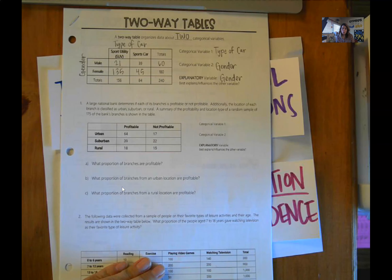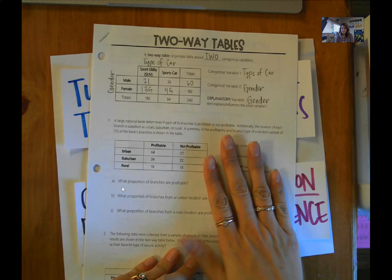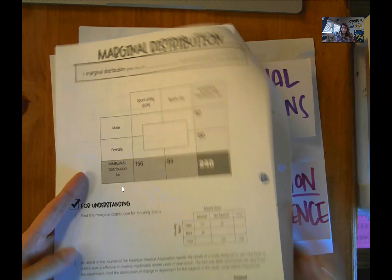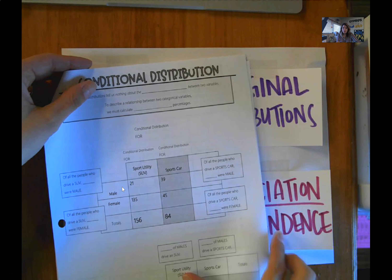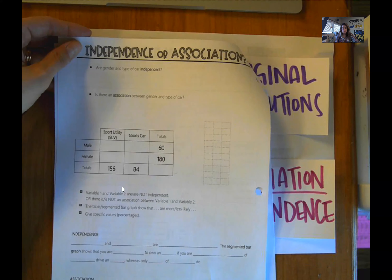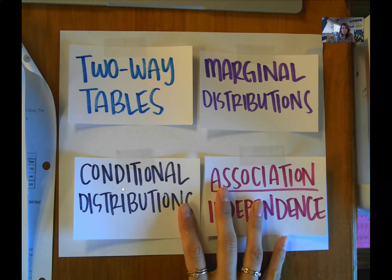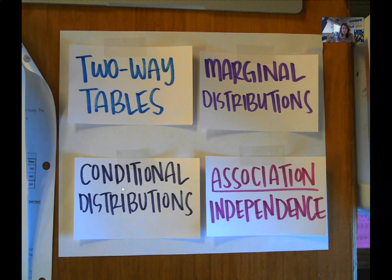Each one of these topics corresponds to a page in the packet that you got in class, or it's attached to this module if you are a distance learner. You are going to do the two-way tables page, the marginal distribution page, the conditional distribution page, and the independence or association page. So four separate videos — these all make up one lesson, but I felt it would be easier to break it up into the four different ideas within the lesson.